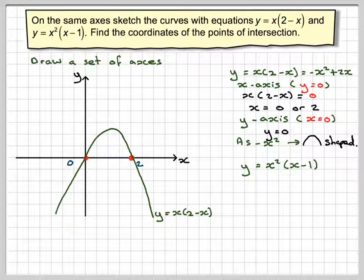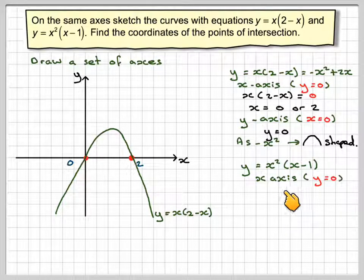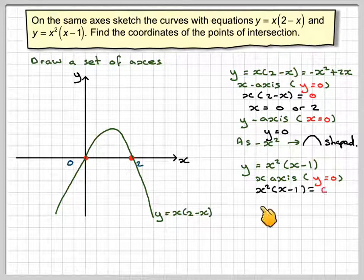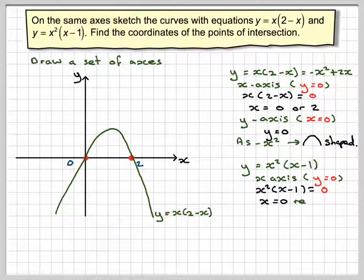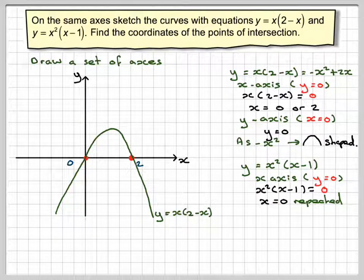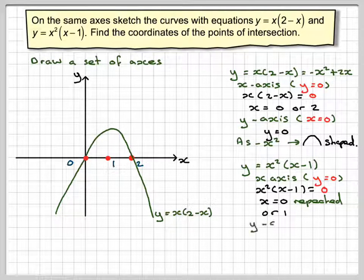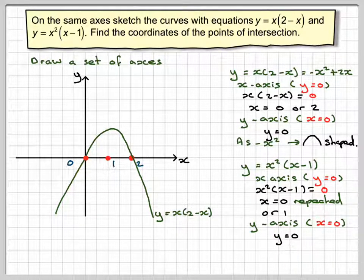The other one is a cubic: y = x²(x - 1). For the x-axis, y = 0, so x²(x - 1) = 0, which means either x = 0 — but that's a repeated root, meaning it's going to be a maximum or minimum — or x = 1. Mark those points onto the graph. For the y-axis, x = 0, and again y = 0, so it passes through that point.